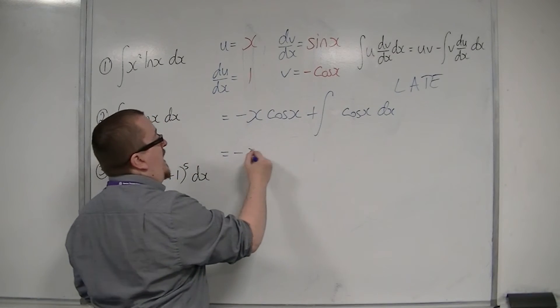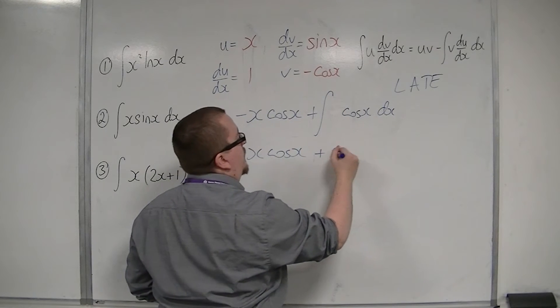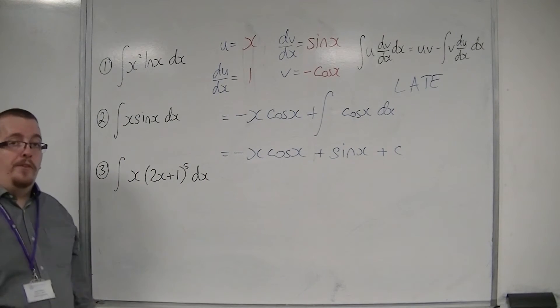So we have minus x cos x, and cos x integrates to sine, so this is plus sine x plus c. And that's number two.